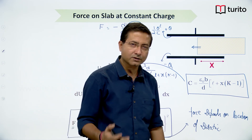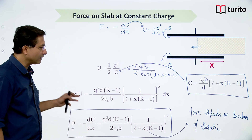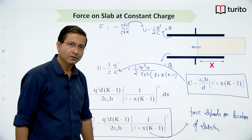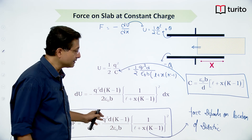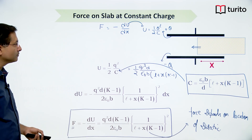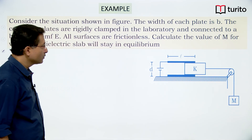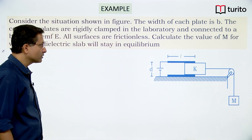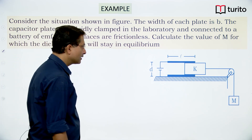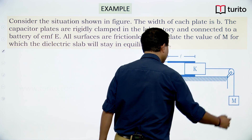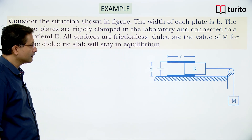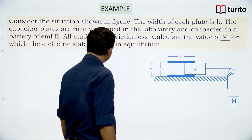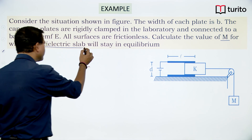In the first case the force is independent of x, in the second case it depends on x. Now let us see one example: between two plates of a capacitor, a dielectric is placed partially occupying the space, and on the other side it is connected via a string holding a block of mass m. Calculate the value of m for which the dielectric slab stays in equilibrium.